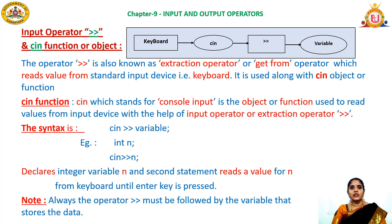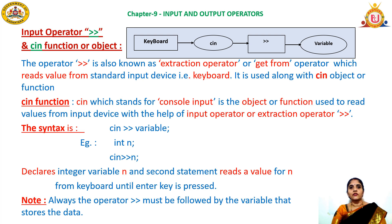For example, I declare int n - n is a variable that stores an integer value. Then I write: cin >> n; Whatever the user enters until they press the Enter key gets stored at the memory location named n. The first statement declares an integer variable n, and the second statement reads a value for n from the keyboard until the Enter key is pressed.